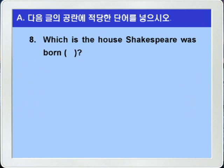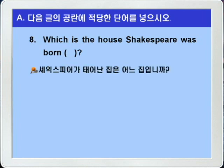8번입니다. 'Which is the house Shakespeare was born blank?' Shakespeare가 태어난 집은 어느 것이냐, 즉 Shakespeare가 태어난 집은 어느 집입니까, 이런 얘기죠. 블랭크에는 전치사 in이 들어가면 되겠습니다.